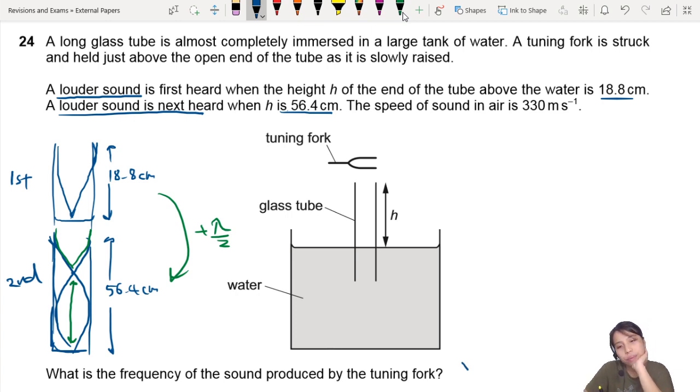To find frequency, you need F times lambda. But we don't know lambda. Do we know frequency? We need to find lambda. This is where the key comes into play.